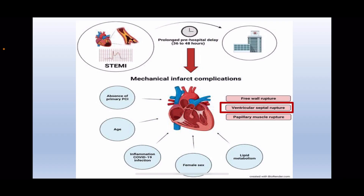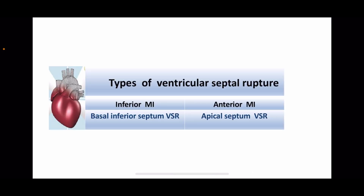The most common causes for mechanical infarction complications after STEMI are prolonged pre-hospital delay, absence of primary PCI, prolonged ischemia, advanced age, female sex, and dyslipidemia. All these risk factors may induce mechanical complications such as free wall rupture. There are two types of ventricular septal rupture: after inferior myocardial infarction it will induce basal septal rupture, and after anterior myocardial infarction it will induce apical septum rupture, as in our case.